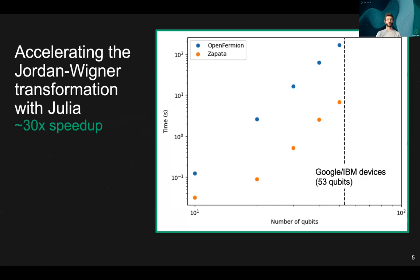The Jordan-Wigner transformation is a classical pre-processing step that's used in many quantum algorithms for chemistry. As we look towards the next generation of quantum devices, the compute cost of this pre-processing step can be pretty significant.